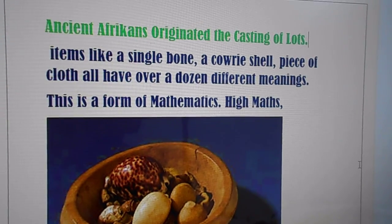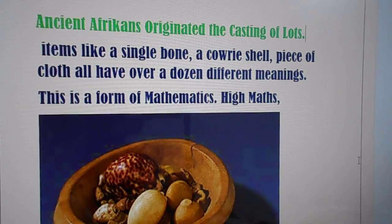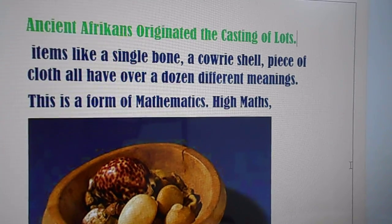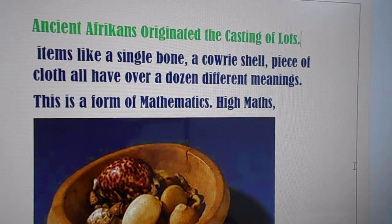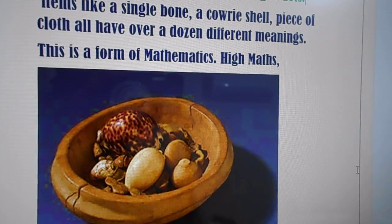Ancient Africans originated the casting of lots. Items like a bone, a cowrie shell, a piece of cloth all have over a dozen different meanings. This is a form of higher mathematics.